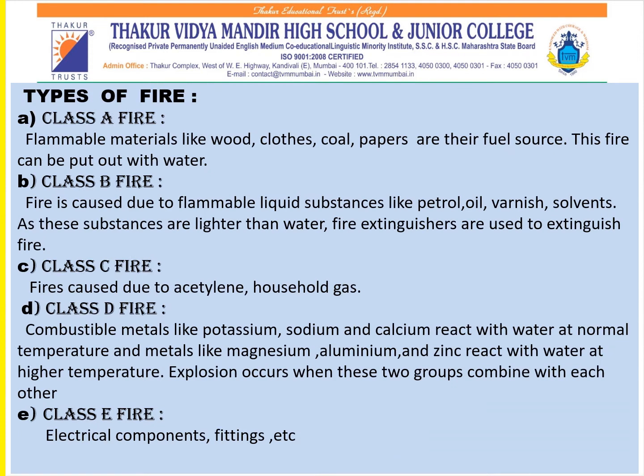Now coming to the types of fire: Class A, Class B, Class C, Class D and Class E fire. In Class A fire, flammable materials like wood, clothes, coal, and papers are the fuel source, and this fire can be put out with water. Class B fire is caused due to flammable liquid substances like petrol, oil, varnish, and solvents. Since these substances are lighter than water, fire extinguishers are used to extinguish Class B fire.